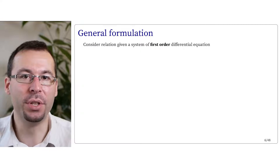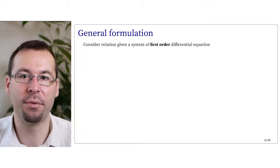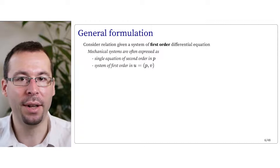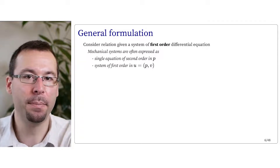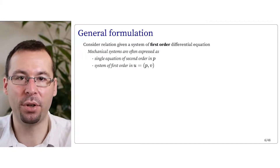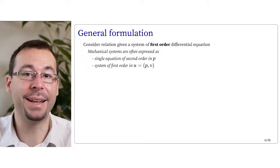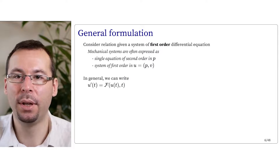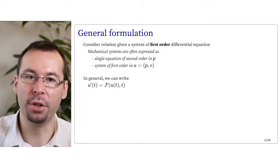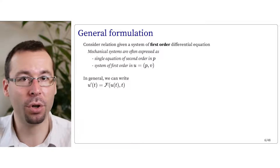In general, we can express the ODE — the ordinary differential equation — as a system of first-order differential equations. For instance, in a mechanical system, we have a single equation of second order expressed with position p, p prime, and p double-prime. But we can also express it as a system of first order with variables p and v, calling this extended variable pv as u. Very generally, we can write u prime of t equals some function f depending on u of t and time t, where f is possibly a nonlinear function.